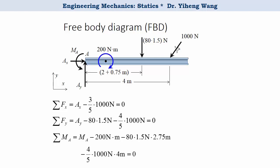The resultant moment about point A equals the unknown couple moment at the wall MA, minus the free couple moment of 200 Nm, minus the moment caused by the distributed load, and minus the moment caused by the vertical component of the 1000 N force, and it equals zero. Now we have three equations and three unknowns, and we can solve for all of them. The solutions all have positive magnitudes, meaning they have the same directions as assumed in the free body diagram. If a calculated result is negative, it has the opposite direction from what was assumed.